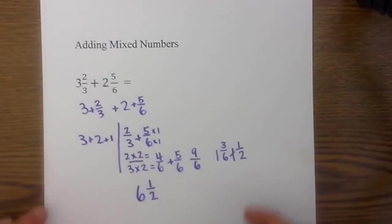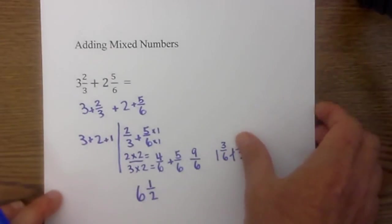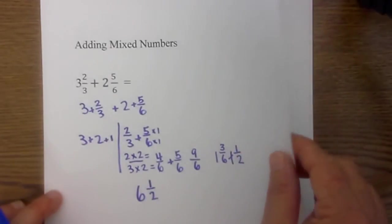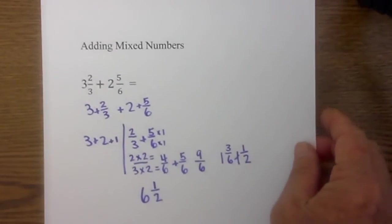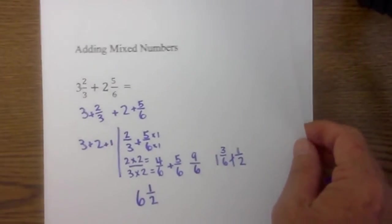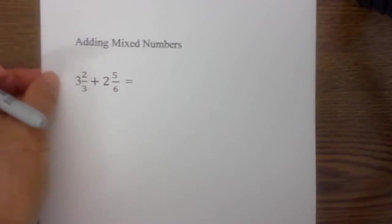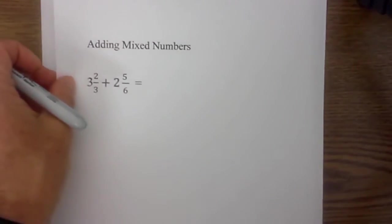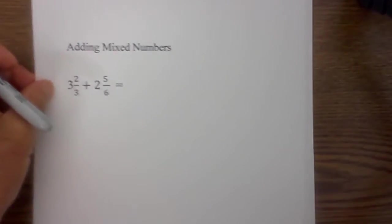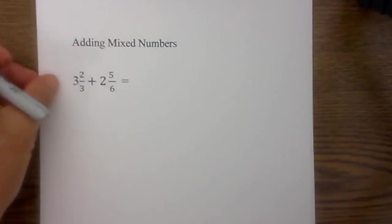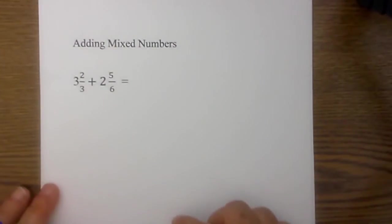So it becomes three plus two plus one equals six, and one-half. The answer is six and one-half. Now let me show you the same thing but we're going to convert it into an improper fraction.